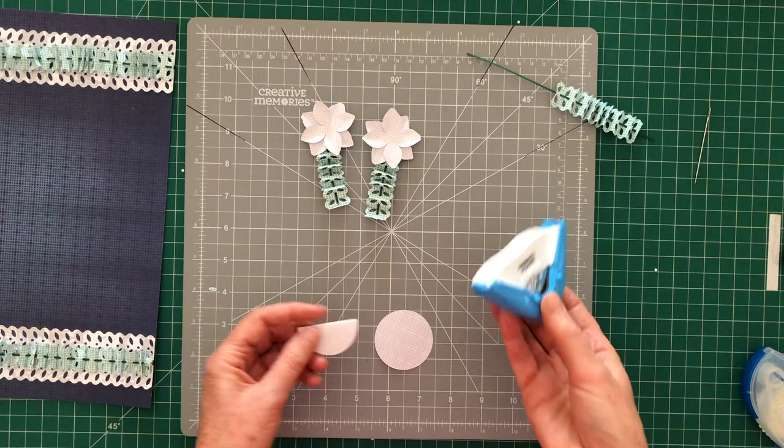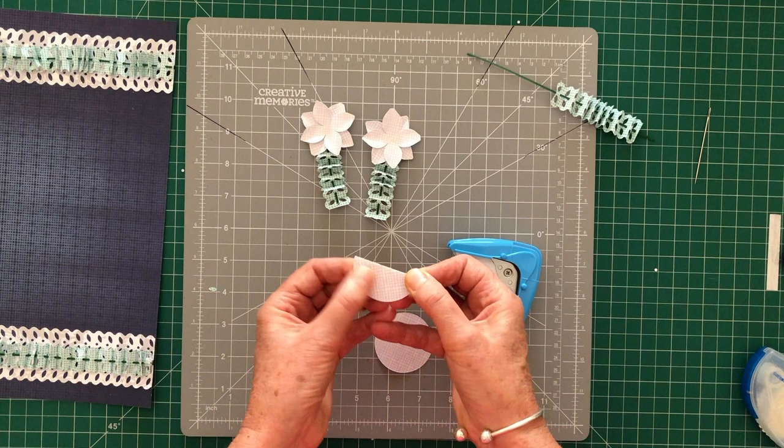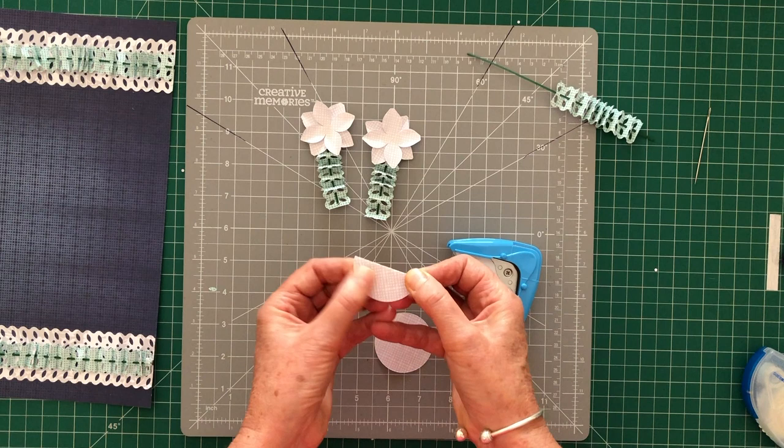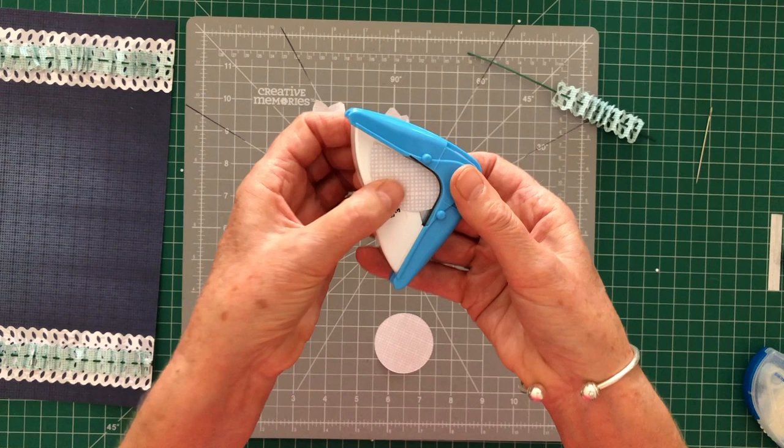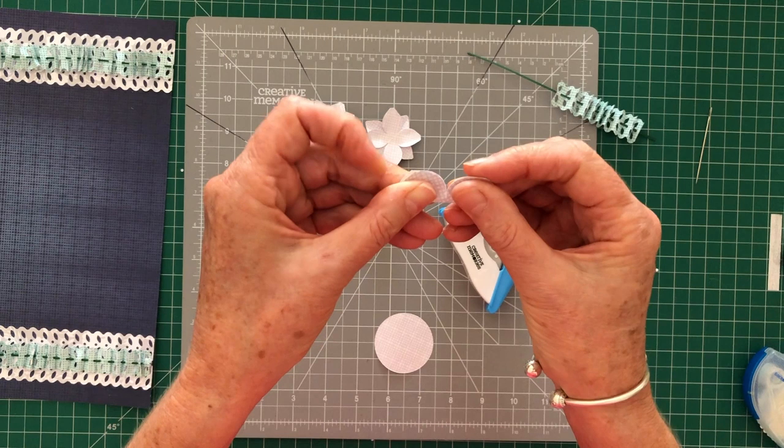To make the little flower I also use our corner rounder, our double corner rounder because you can use it two ways. So what we do with the little circle is we fold it in half just straight down the middle. We pop it into the corner rounder as far as it will go and punch. We flip it over, push it into the corner rounder as far as it will go and punch. And what we'll get is this little shape.